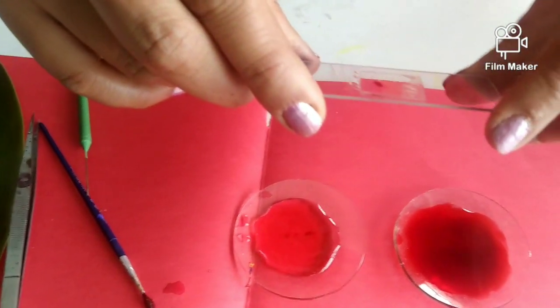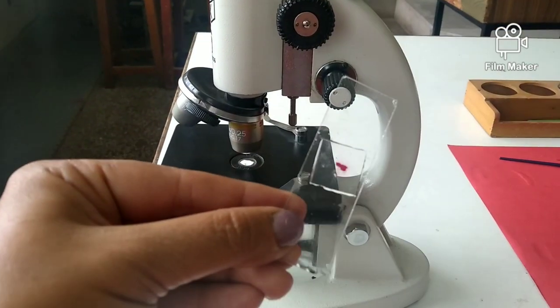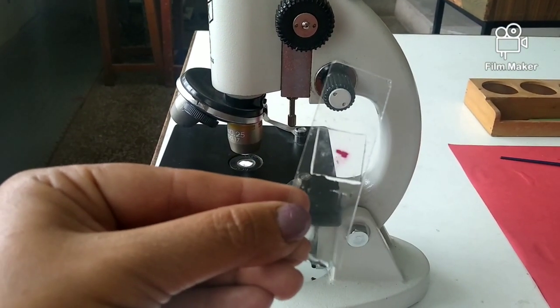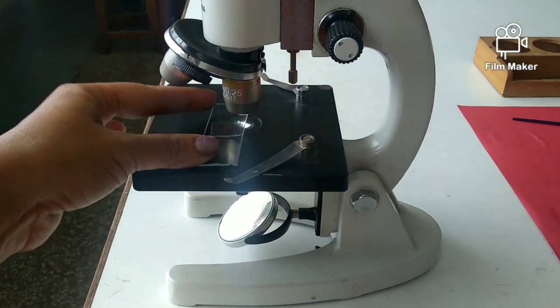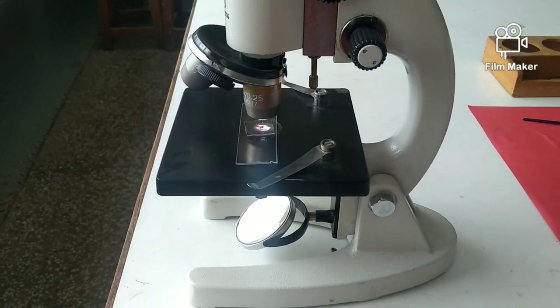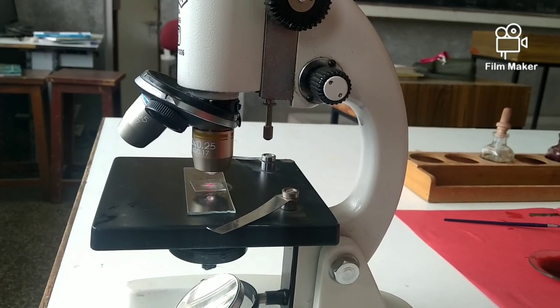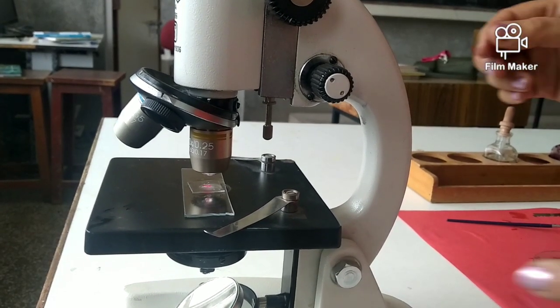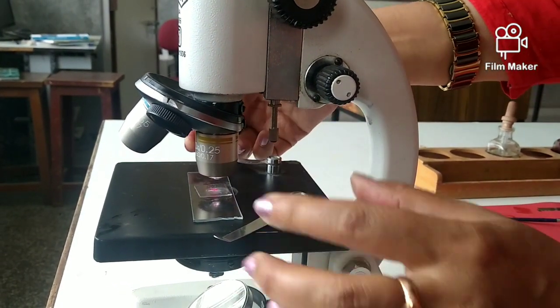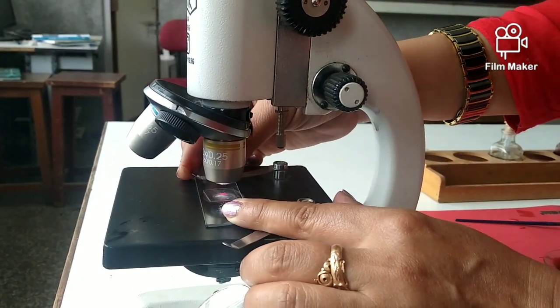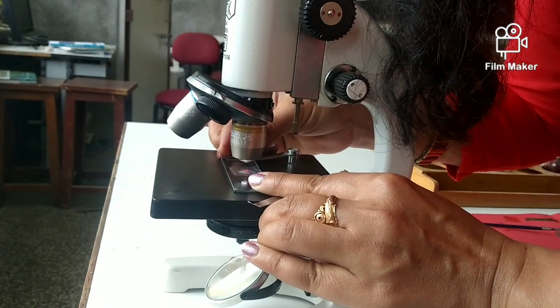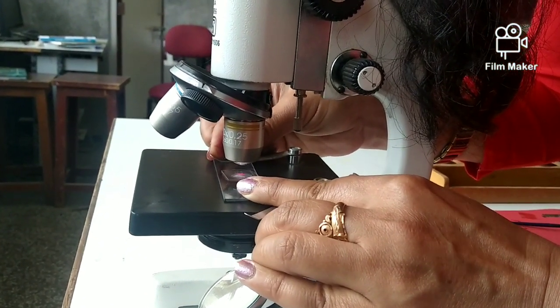Now this slide is almost ready to observe under the microscope. Let's examine it. We have to adjust the lens of the microscope so that a clear image can be seen.